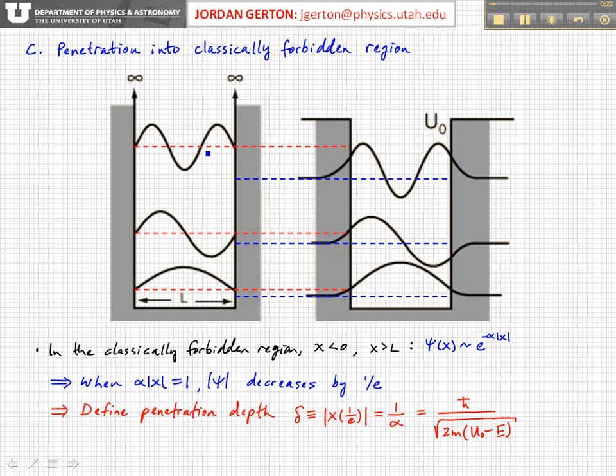And the finite potential well wave functions, n equals one, two, and three. This gives us a way to compare.